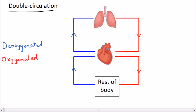Let's start with the heart pumping blood to the lungs. The heart is pumping deoxygenated blood — blood with little oxygen in it — to the lungs. At the lungs the blood picks up more oxygen and then flows back to the heart.